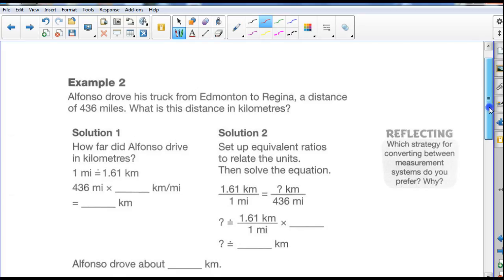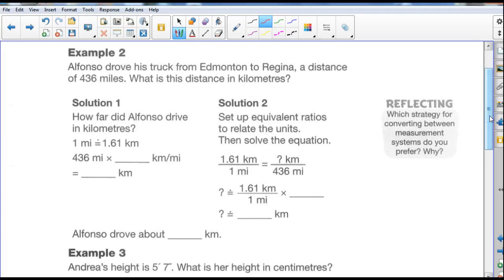So let's go through another example. It says, Alfonso drove his truck from Edmonton to Regina, a distance of 436 miles. What is this distance in kilometers? Well, solution number one, how far did Alfonso drive in kilometers?